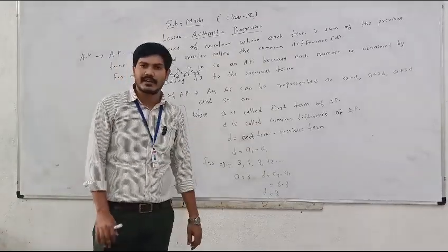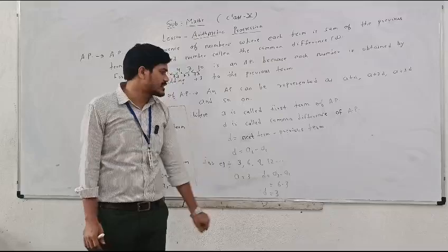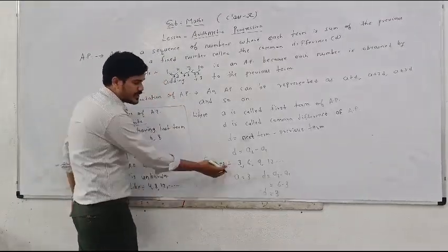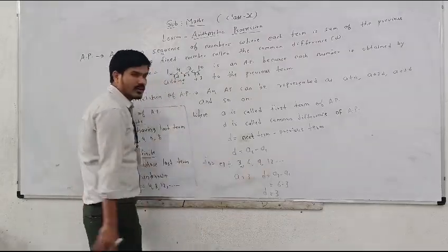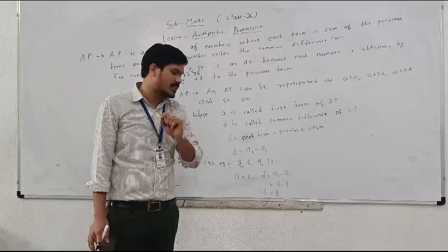How to find D? We can find D by using next term minus previous term. For example, we have an AP that is 3, 6, 9, 12. In this we need to find the first term and the common difference.